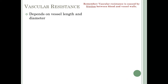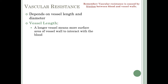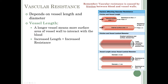Now let's look more at vascular resistance, the most contributing factor to overall resistance. Vascular resistance is caused by friction between blood and vessel walls, and depends on vessel length and diameter. A longer vessel means more surface area of vessel wall to interact with blood, so increased length increases resistance. A shorter vessel has less wall to rub against, giving lower resistance.